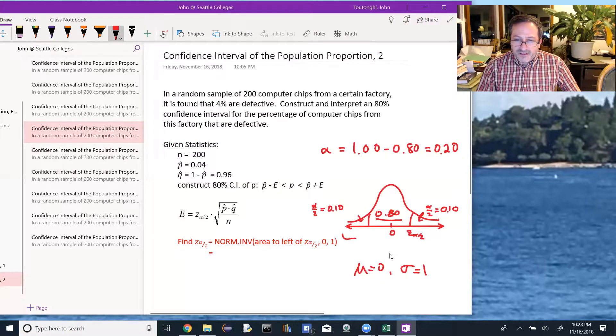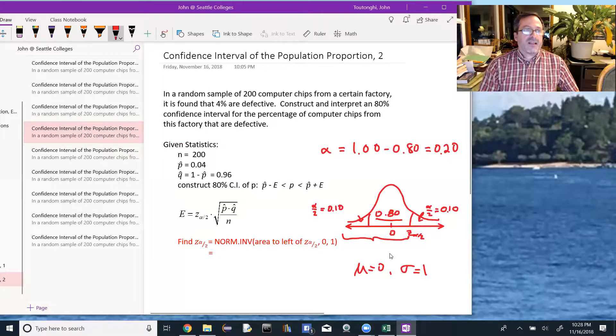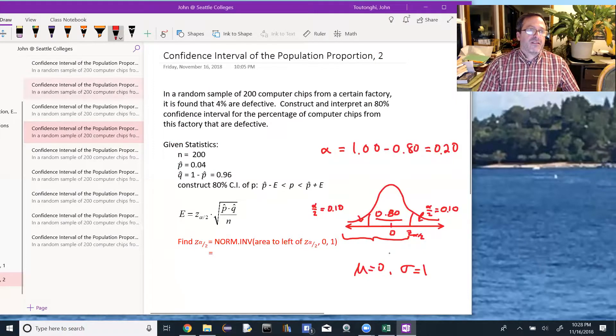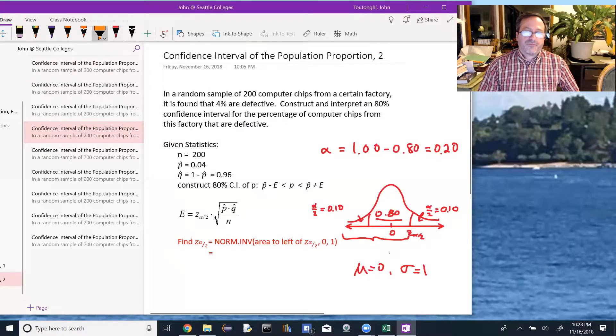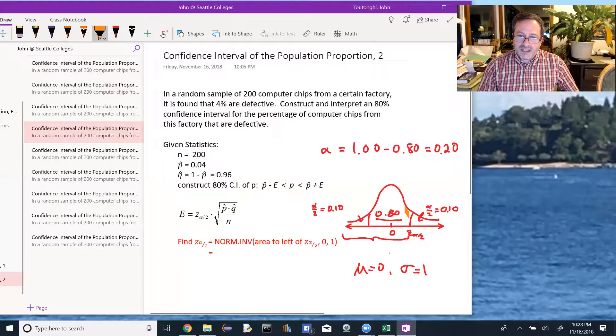So you have 1.00 minus the 80%. That leaves us with 20% left over for the two tails. So we cut that in half. That's our alpha. But we're looking at the tails of alpha over 2 over here and alpha over 2 over there. So there's 10% in both. And then to utilize Excel, we're looking at all the area to the left of z alpha over 2. So that's all of this 80% along with this little 10% over here or 90%.